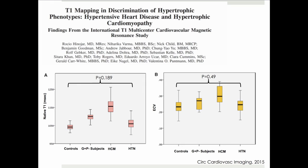We've also shown that diffuse interstitial fibrosis is an uncommon feature of compensated hypertensive hypertrophy, with values of native T1 and ECV not dissimilar from those of controls.